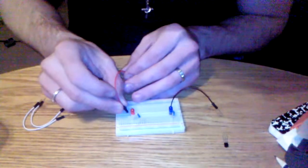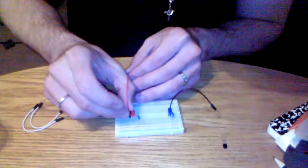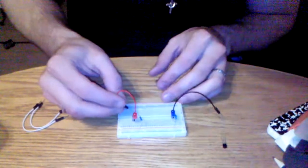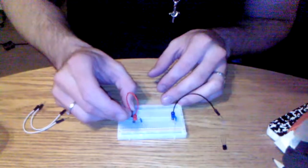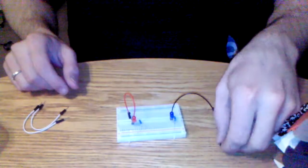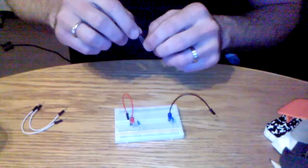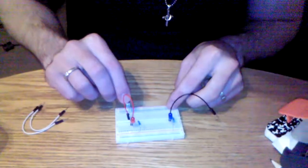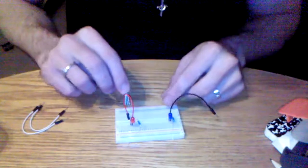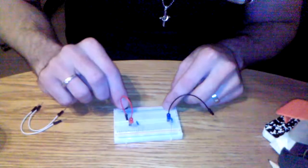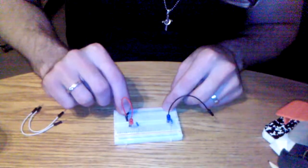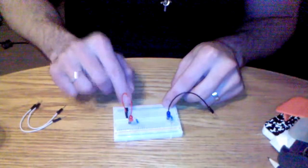Take another jumper, and jump it over to the other side of the breadboard. Take your transistor, and have that connect to the base. So your jumper will be in the same line as your base.